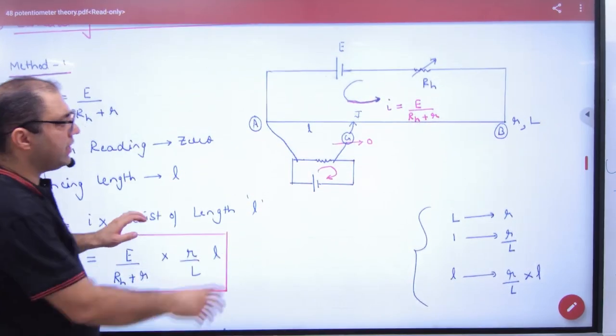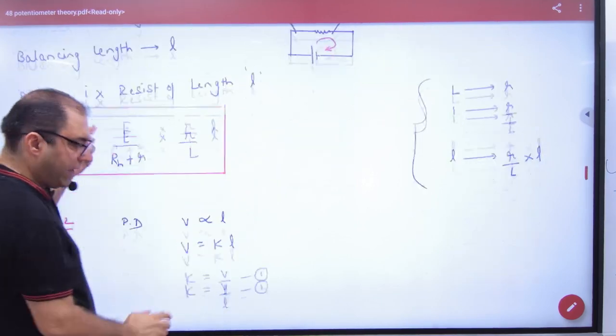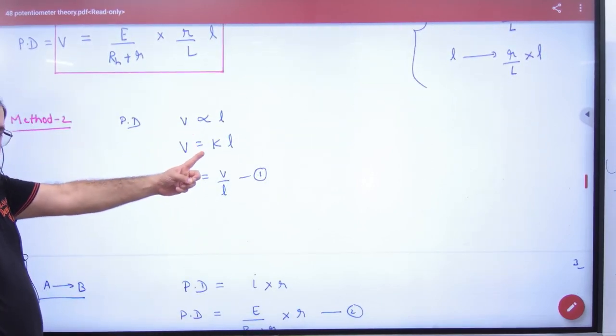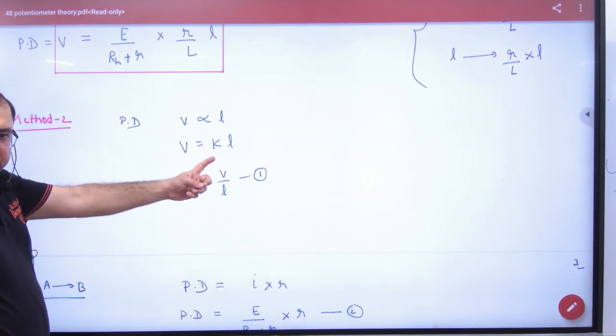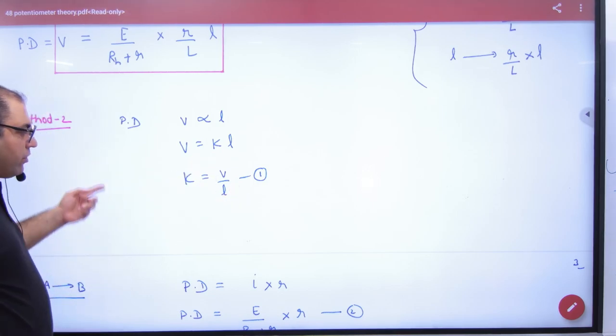If the balancing length is L and the potential difference is V, then V is proportional to L. V equals K times L, where K is a constant called the potential gradient. So potential gradient K equals V by L.